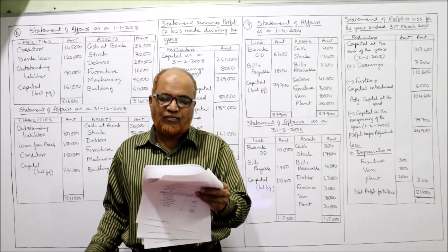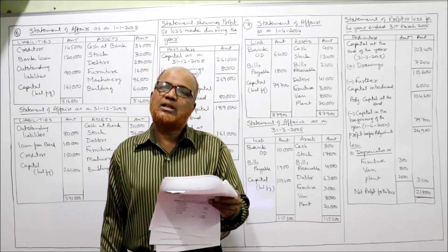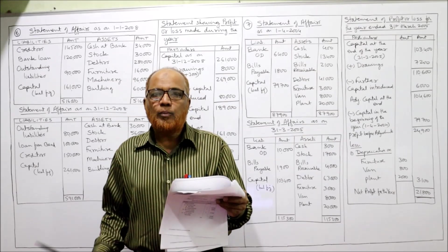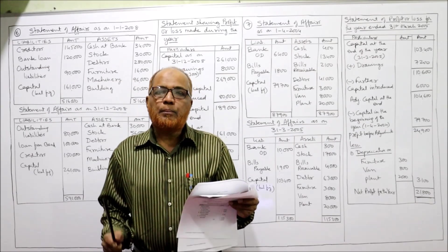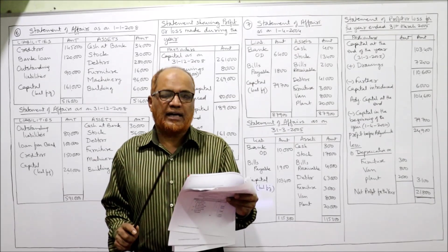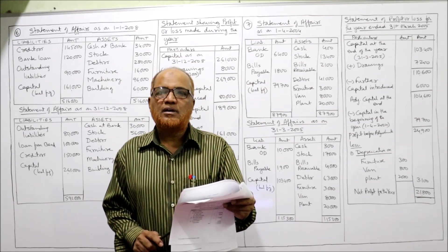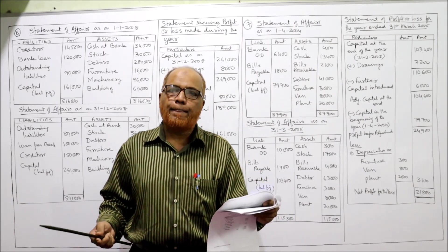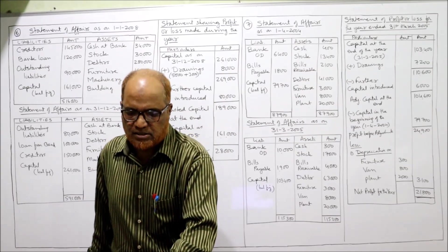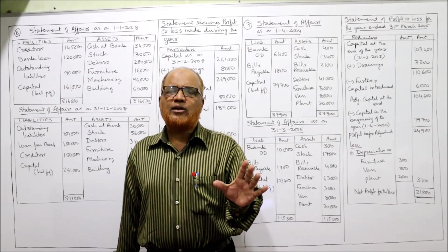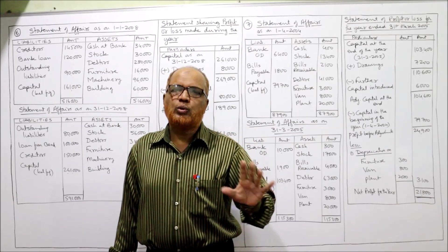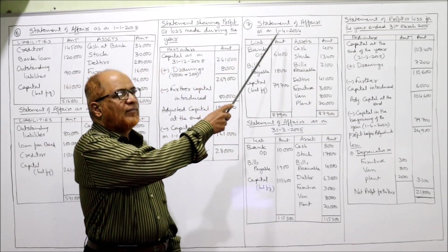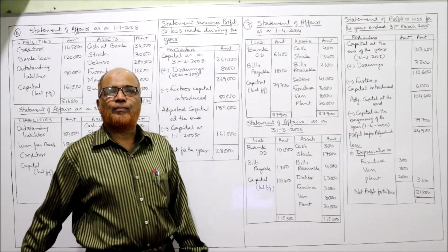Further capital introduced: Rs.6,000. Depreciate all fixed assets at 10%. We have to ascertain the result of business — whether profit or loss — by preparing the required statements. We need capital at the beginning and capital at the end, so we make statement of affairs on 1st April 2004 and 31st March 2005.